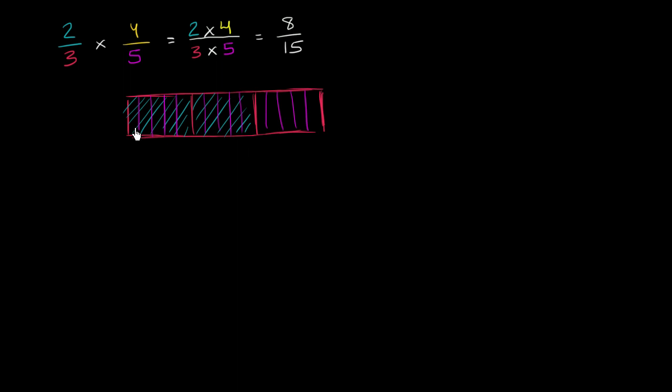So how many 5ths do we have here? We have 1, 2, 3, 4, 5, 6, 7, 8, 9, 10. And we've got to be careful. These really aren't 5ths. These are actually 15ths because the whole is this thing over here. So I should really say how many 15ths do we have? And that's where we get this number from.